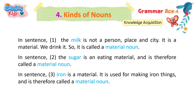In sentence 1, milk is not a person, place, or city — it is a material. We drink it, so it is called a material noun. In sentence 2, sugar is an eating material and is therefore called a material noun. In sentence 3, iron is a material. It is used for making iron things and is therefore called a material noun.